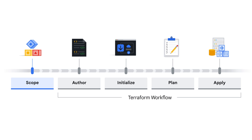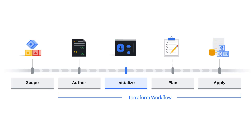In this case, scope the type of compute and database instances needed. The Terraform workflow begins with the author phase, where you author the configuration code for the infrastructure you want to create. During this phase, you code the configuration of the instance, the VPC network, and the database instance that you require. The language used to write this configuration is HCL. The next phase is the initialize phase, where plugins or modules are installed. You run the Terraform init command, which initializes the Terraform configuration directory and installs Google Cloud as the provider.